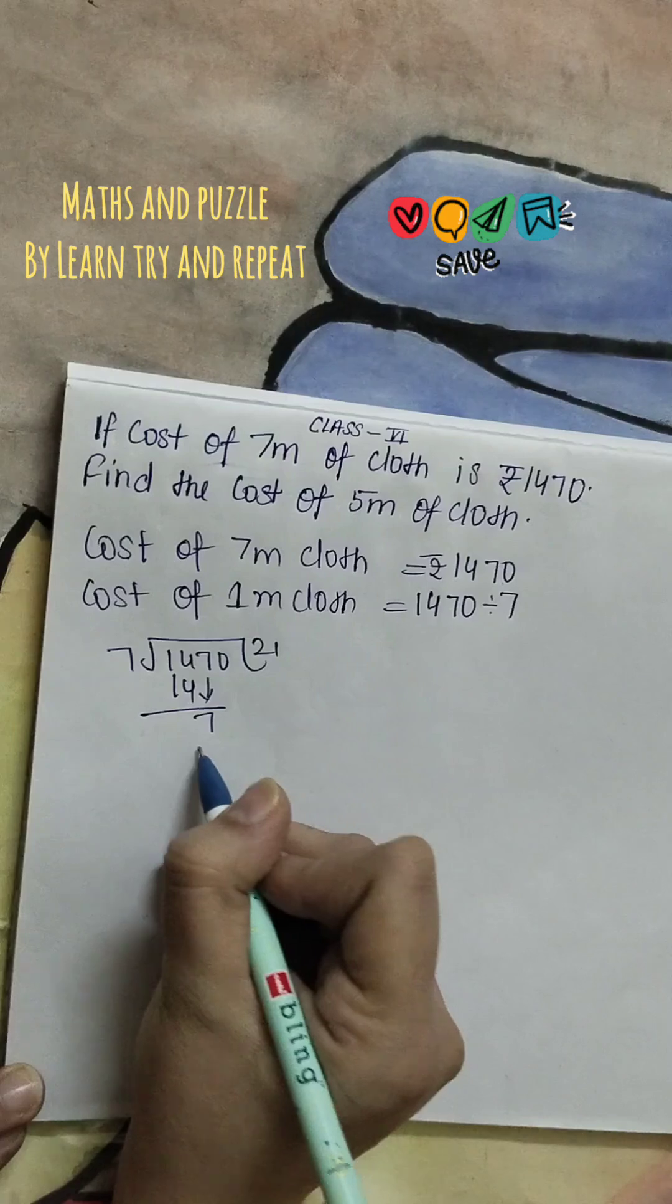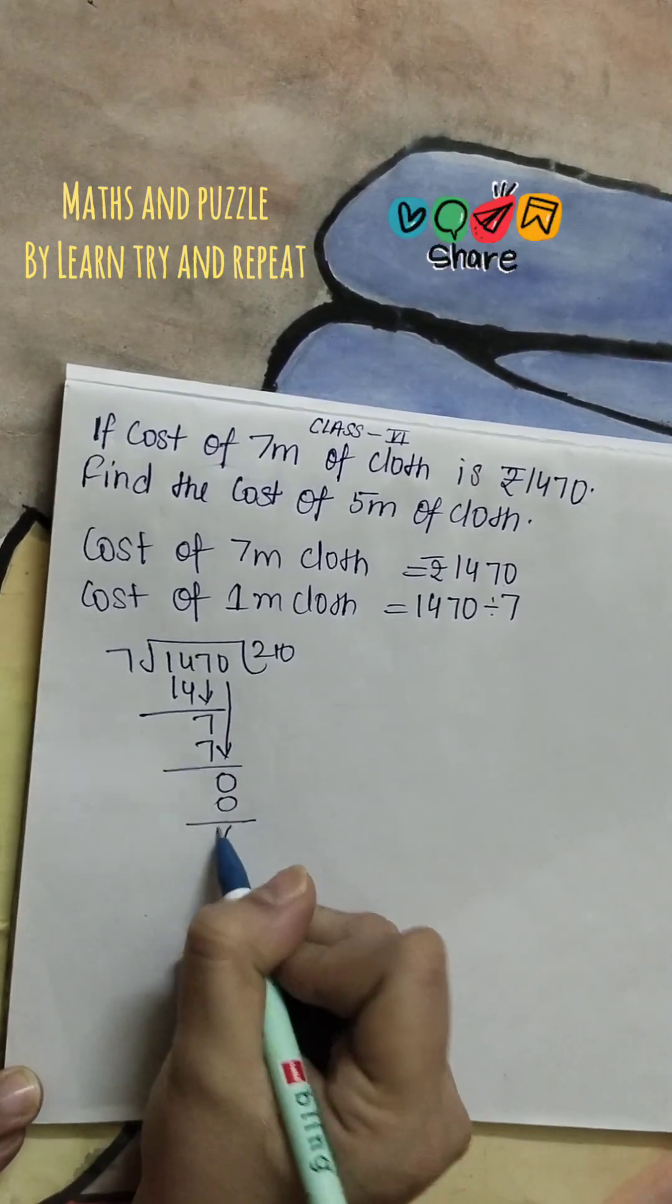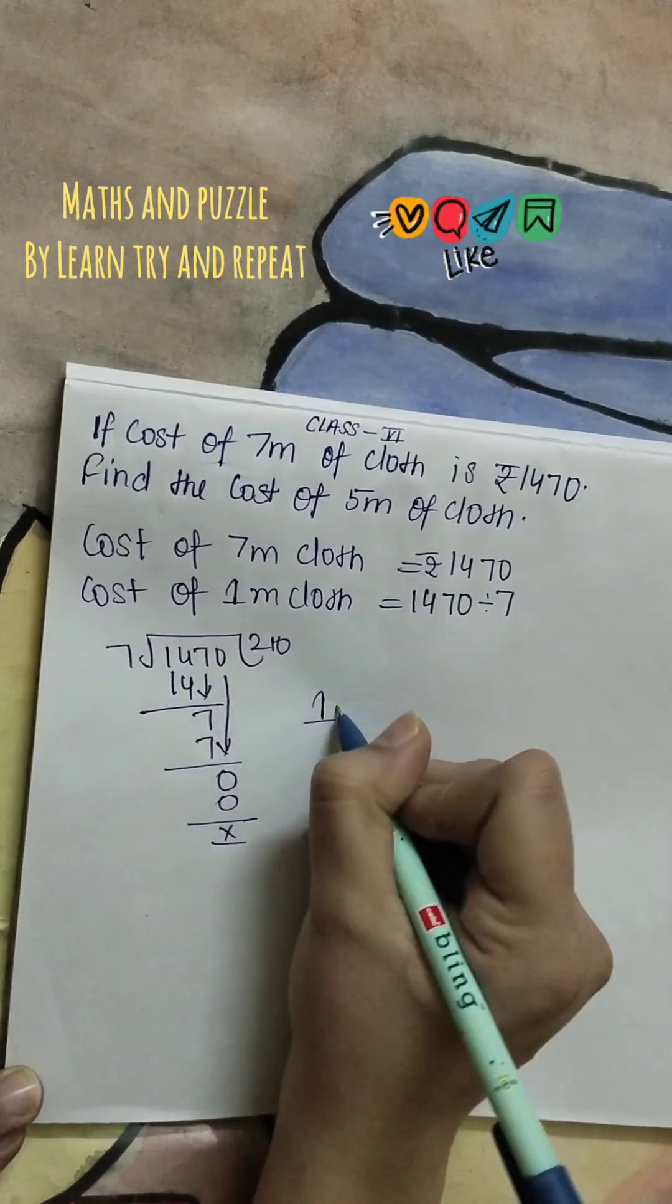7 ones are 7, and this is 0, so we will put 0 over here. So the cost of 1 meter cloth will be rupees 210.